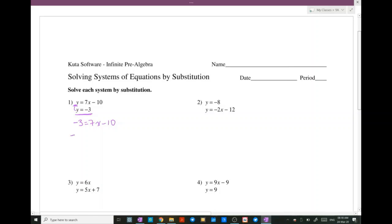And you can write minus 3 equals 7x minus 10. x is on one side, numbers on the other. When you move the minus 10 to the other side, you have to change its sign. So here you have x is equal to 7 over 7, so x is equal to 1.